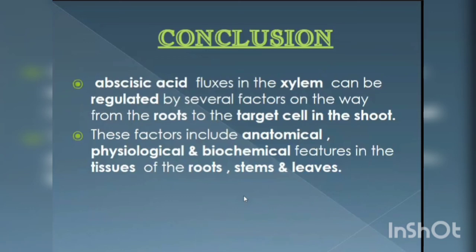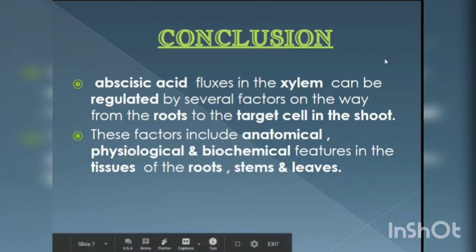The last is Conclusion. Abscisic acid flux in the xylem can be regulated by several factors on the way from the root to the target cell in the shoot. These factors include anatomical, physiological, and biochemical factors in the tissues of the root, stem, and leaves. Thank you all for your patience.